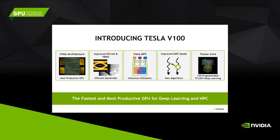That's the reason why we developed the V100 — the fastest and most productive GPU for deep learning and HPC. You can use it for both, since we support single precision, double precision, as well as tensor cores, which I'll present later. We made it faster in compute power and memory bandwidth, and also integrated new features to make programming more productive.